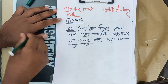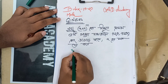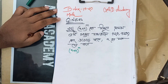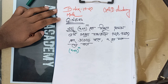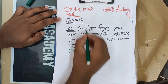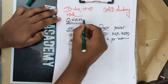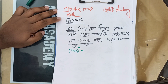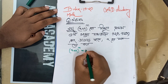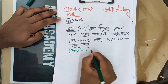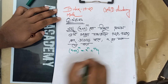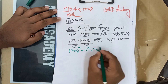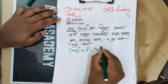The problem is x plus a, whole to the power n. When we expand a whole to the power n, the key term is x to the power n.